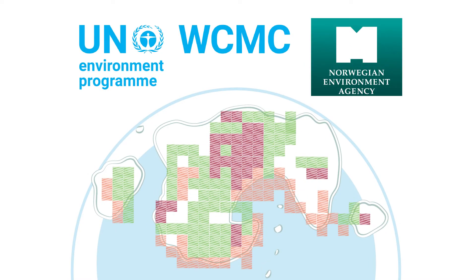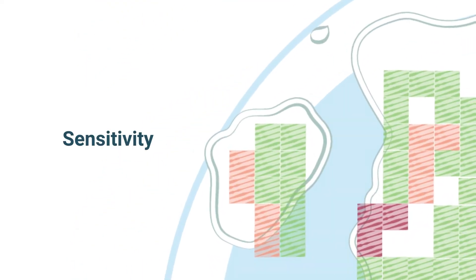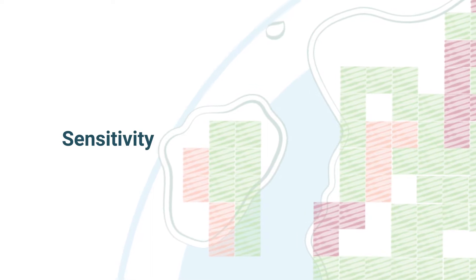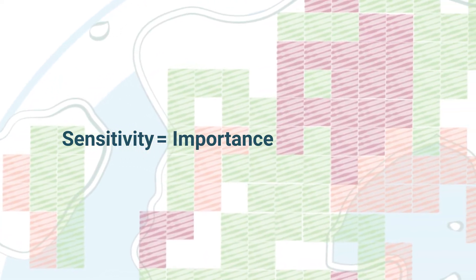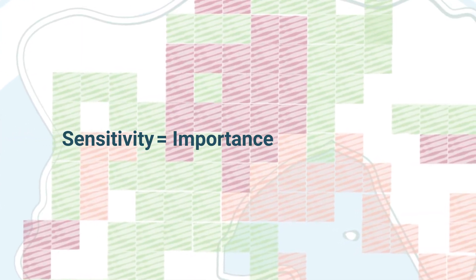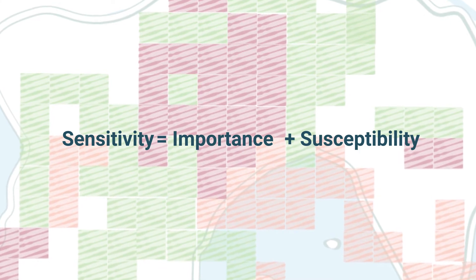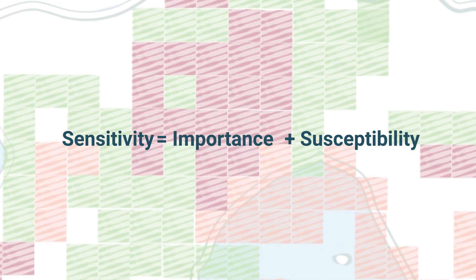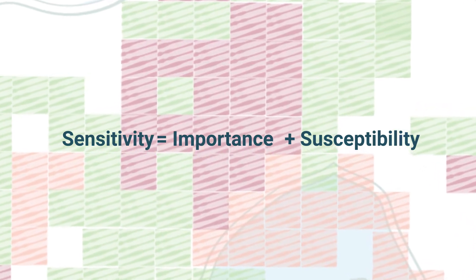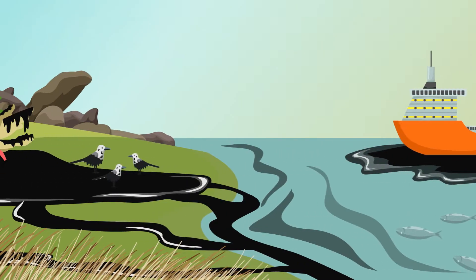This video introduces environmental sensitivity mapping, which is needed to support more sustainable spatial planning decisions. Sensitivity is comprised of the importance of an area or asset based on the ecological or socio-economic values it contains, combined with its susceptibility, which relates to how badly those values may be impacted by any given pressure. The sensitivity of an area therefore varies depending on the type of pressure being considered, whether that is habitat loss or an oil spill.